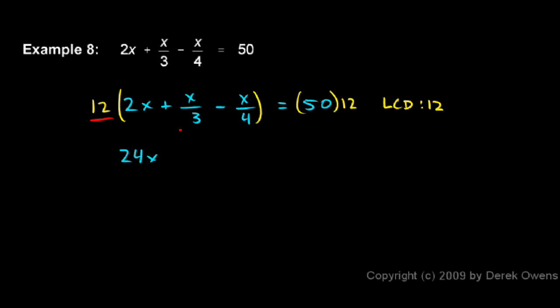Then I have 12 times x over 3, and when I do that, this 12, remember, is 12 over 1, so the 12 is in the numerator. 12 over 3 reduces to a 4, and I still have that x there, so this is plus 4 times x for my next term, 4x.